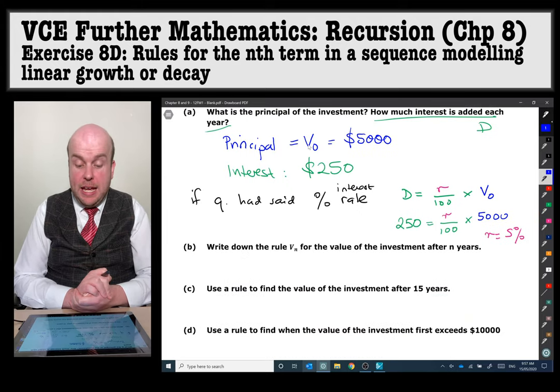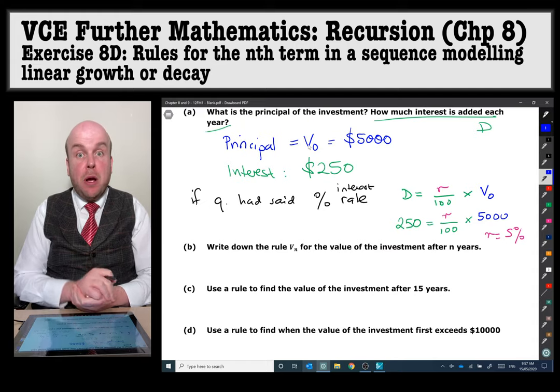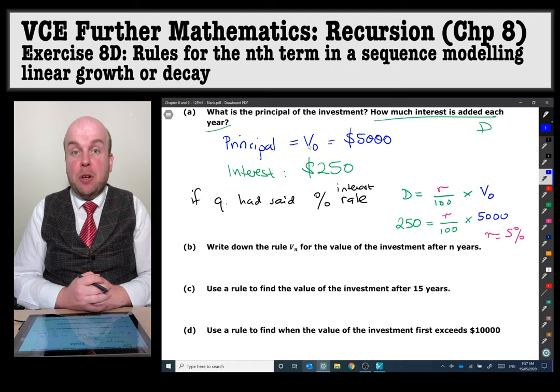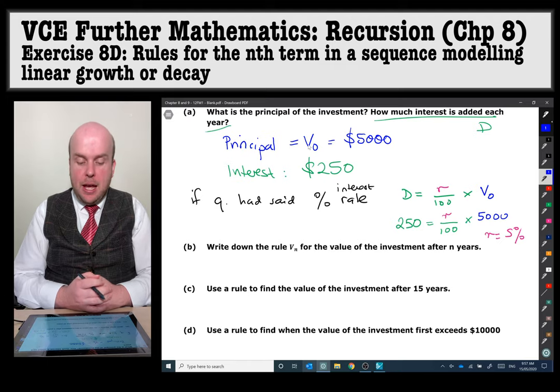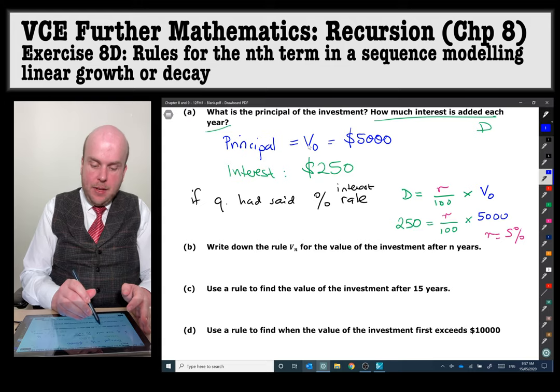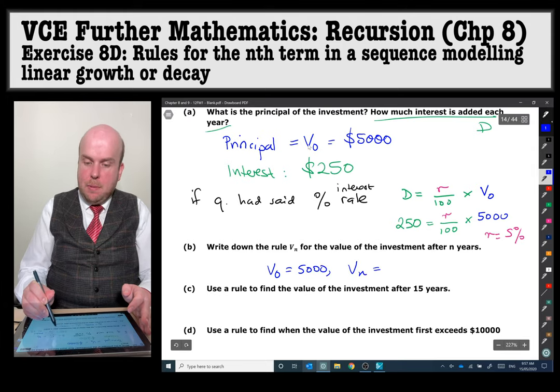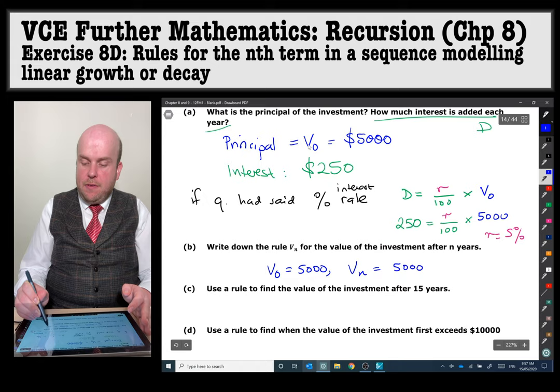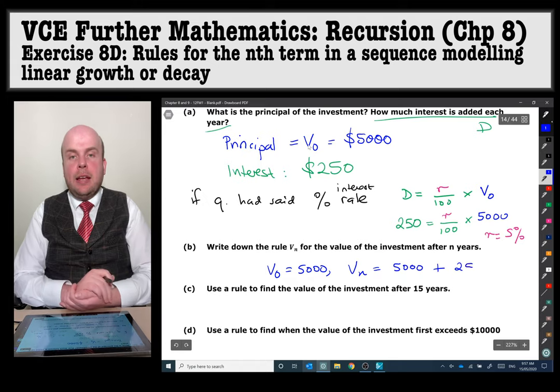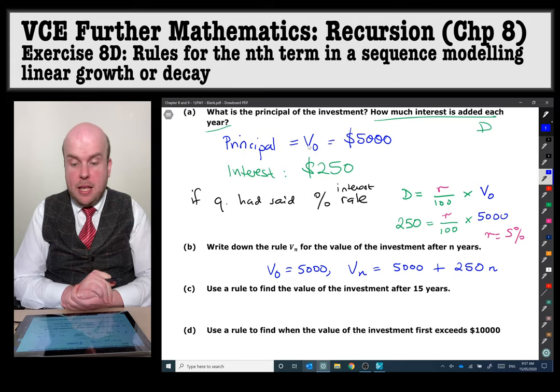Part B, write down the rule Vn for the value of the investment after N years. So this is where we need to convert that original recurrence relation into a rule. And the rule will look something like this. I know that V0 is equal to 5,000. Vn is equal to 5,000 plus 250n. And I just write the little n because the 250 is that d value and the n was the number of months and then V0 there was 5,000.